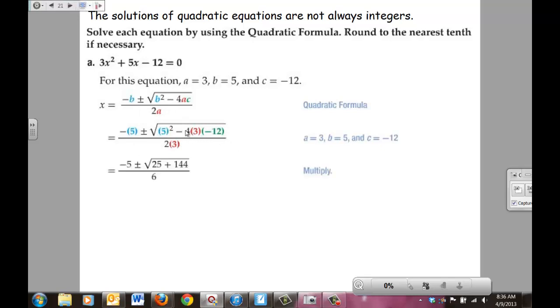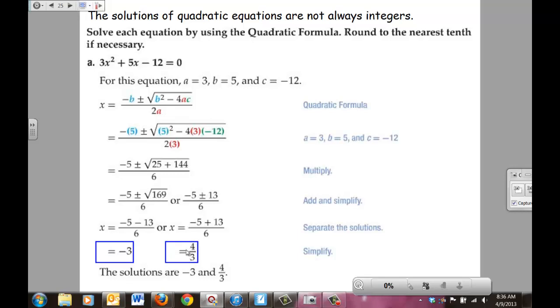And then work on the simplifying. -4 times 3 times -12 is positive 144. 5² is 25. 25 + 144 is 169. Square root of 169 is 13. And here you break it down to two separate problems: either -5 - 13 divided by 6, or -5 + 13 divided by 6. That's going to end up giving you either -3 or 4/3 for your final answer. And notice 4/3 is not an integer. It is the same thing as 1.3 repeating.